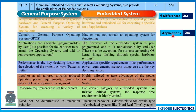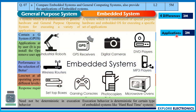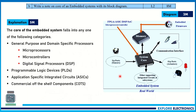We need to write the applications of embedded system — where we are going to use embedded systems — like in robotics, GPS receivers, digital cameras, gaming consoles, toys. Like this, you can write a few things related to embedded system applications. This question carries five marks.